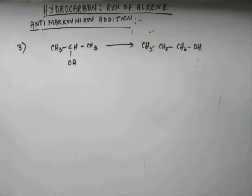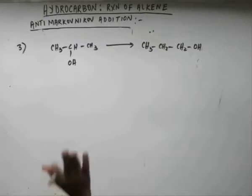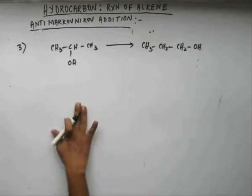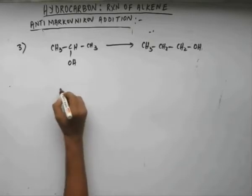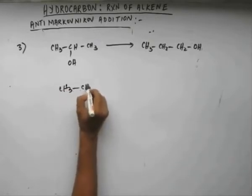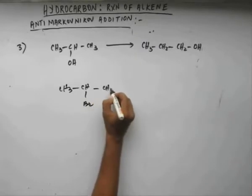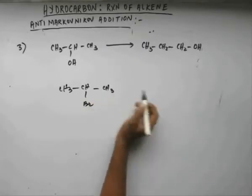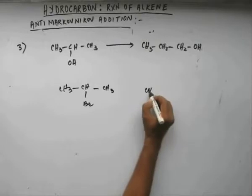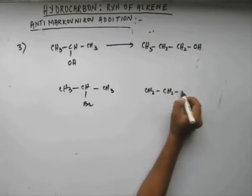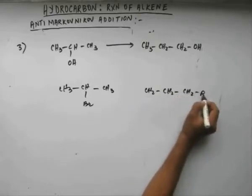I'm going to tell you the answer, but it's better you solve it before hearing it. The line of thinking should be: suppose you had bromine on the second position and you are asked to get bromine on the first position.